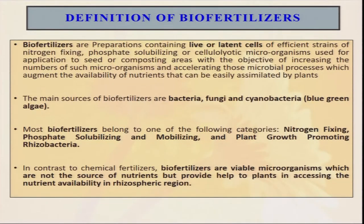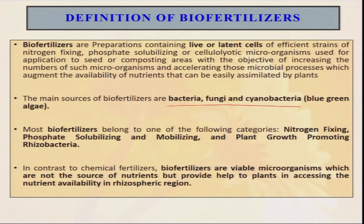The bookish definition of biofertilizer is: it is a preparation containing live or latent cells of different strains of nitrogen-fixing, phosphorus-solubilizing, or cellulolytic microorganisms used for application to seed or composting. Biofertilizers are living organisms. When we culture these living organisms artificially and apply them along with the seed, or maybe in spray or in the soil, with the aim to enhance crop growth and productivity, they are called biofertilizers. There are different types of biofertilizers — mainly bacteria, fungi, and cyanobacteria. Some are nitrogen-fixing, some are phosphorus-solubilizing, some are mobilizing, and some also help in potassium solubilizing. In the next few slides I will describe in detail what the different types of biofertilizers are and how they work in close proximity with plant roots.